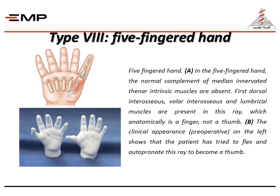Type eight is the five-fingered hand. In the five-fingered hand, the normal complement of median-innervated thenar muscles is absent. The first dorsal interosseous, volar interosseous, and lumbrical muscles are present in this ray, which anatomically is a finger, not a thumb. The clinical appearance preoperatively shows the patient had tried to flex and auto-pronate this ray to become a thumb.